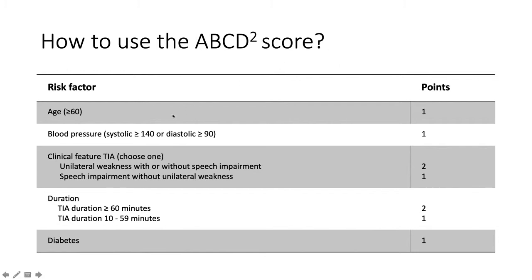This is how you give the points. Age more than 60, you get one point. Blood pressure systolic 140 and above or diastolic 90 and above, you get one point. This blood pressure criterion is different from the CURB-65 blood pressure — for CURB-65 it is low blood pressure, and for the ABCD2 score it is high blood pressure.